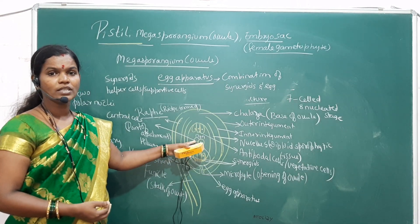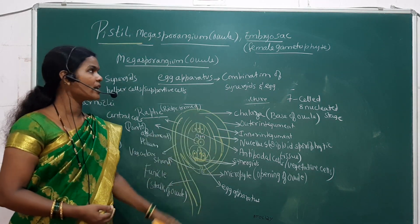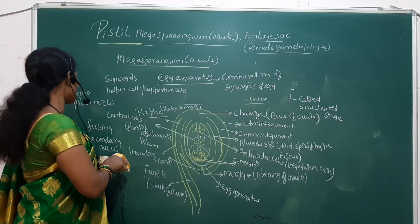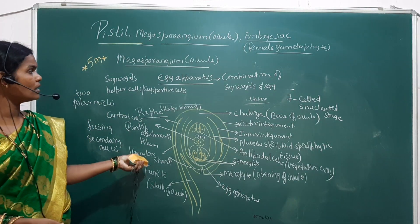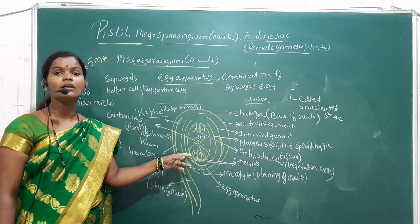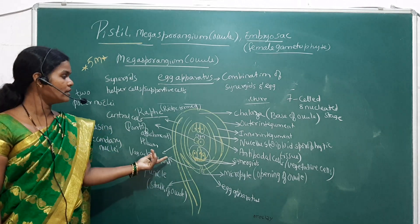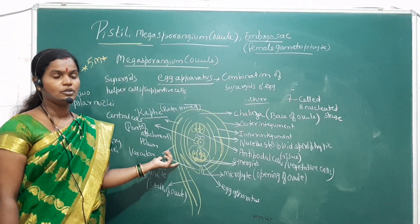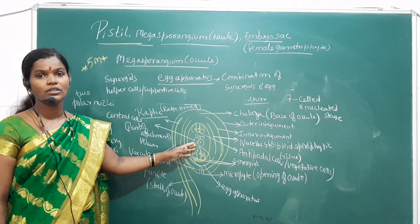This is the complete structure of the megasporangium, or ovule — specifically the anatropous ovule — along with the female gametophyte. This is very important for your final exam. You have seen the pistil, megasporangium, and embryo sac. Make sure to draw and practice this diagram, as it is very important for the final exam.